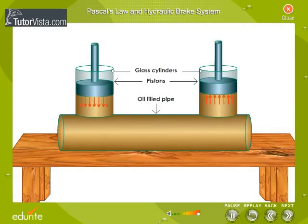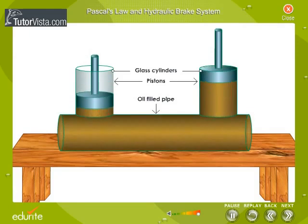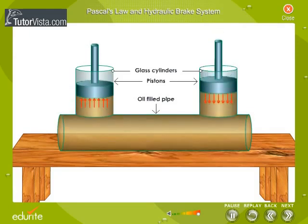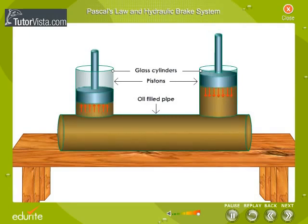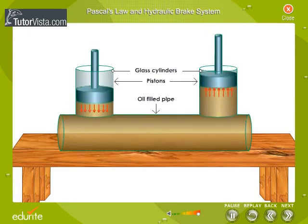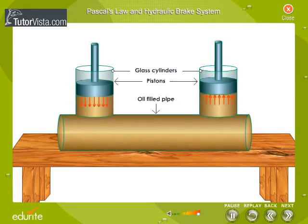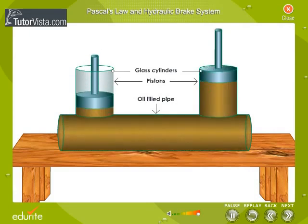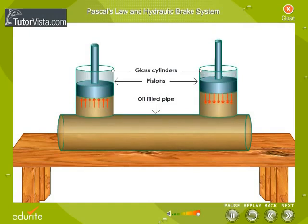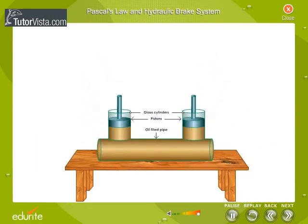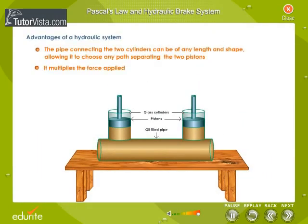If you apply a downward force on one of the pistons, then the force is transmitted to the second piston through the oil in the pipe. Since oil is incompressible, the efficiency is very good. Thus most of the applied force appears at the second piston.